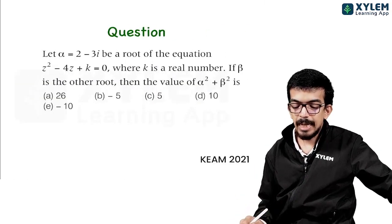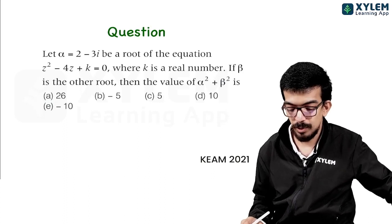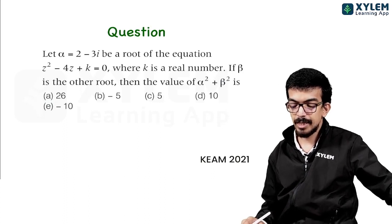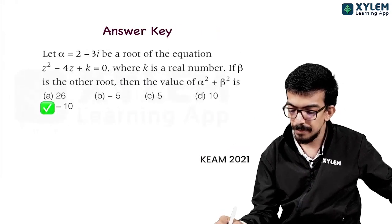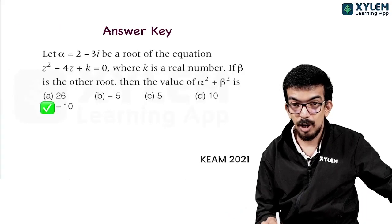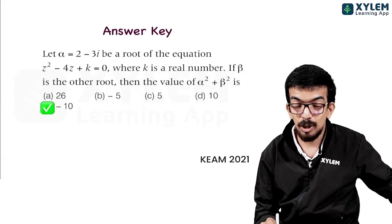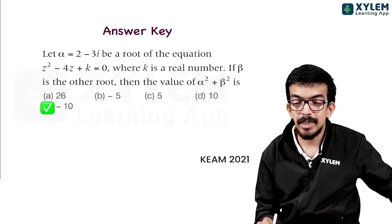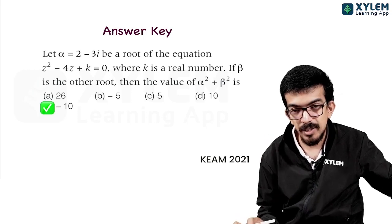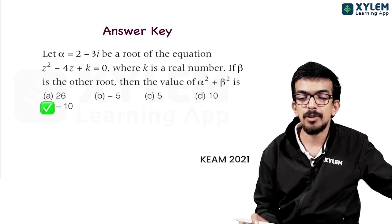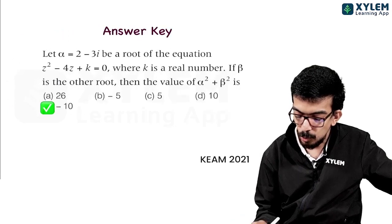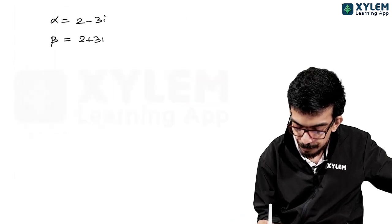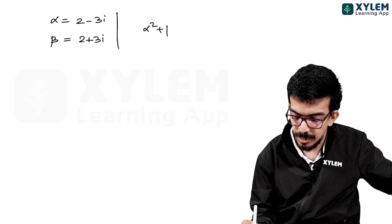Next question: alpha is equal to 2 minus 3i, a root of the equation Z squared minus 4Z plus K equals zero, where K is a real number and beta is the other root. Then the value of alpha squared plus beta squared. For a quadratic equation with real coefficients, complex roots always occur in conjugate pairs, so beta is equal to 2 plus 3i.